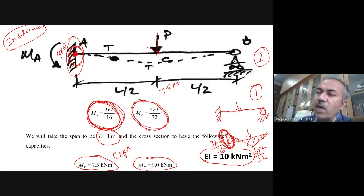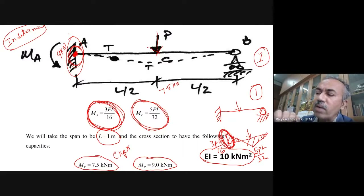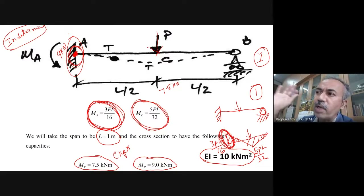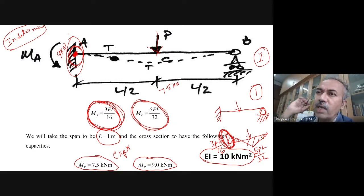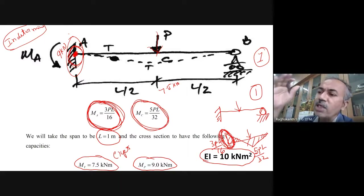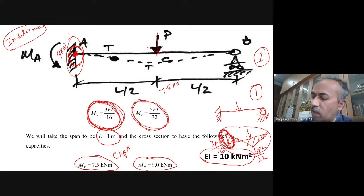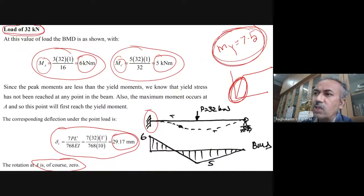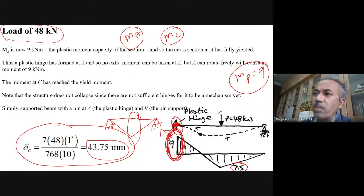If it is an indeterminate problem, one hinge is not sufficient for collapse — two hinges are required. In this problem, the first hinge forms at the location with the highest bending moment, which you can calculate from the bending moment diagram. Once the hinge has formed, the propped cantilever becomes a simply supported beam, and the bending moment diagram changes.